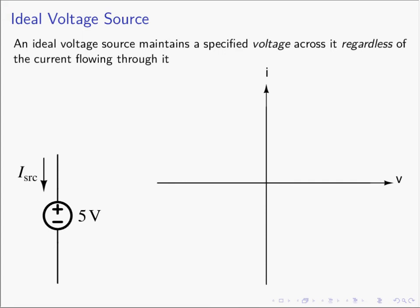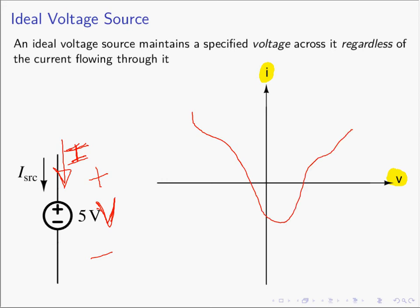The first one is the voltage source. Before we get started, we're going to look at a graphical representation of how we can talk about the behavior of a circuit element. On the right-hand side of the slide is this graph, which we call an IV characteristic. It shows us the relationship between voltage and current — the voltage across a circuit element and the current which flows through it. We use the IV characteristic quite a bit in more advanced electronics, because circuit elements have very complicated behavior, and it's easier to draw their behavior than to write lots of equations.